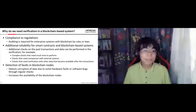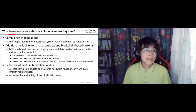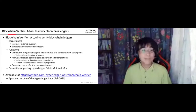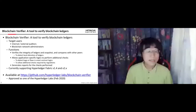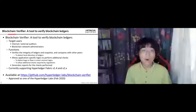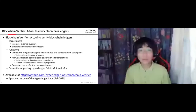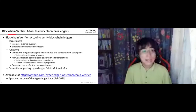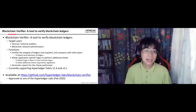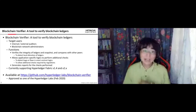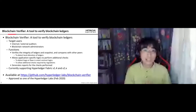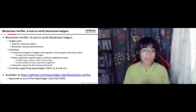To perform this verification, we are developing a tool named the Blockchain Verifier — a tool to verify blockchain ledgers. The target users include internal or external auditors, or blockchain network administrators. This tool has three main functions. The first is to verify the integrity of the ledgers and snapshots and compare them with those in other peers, to detect local alteration of ledgers or faults caused by issues in the blockchain nodes.